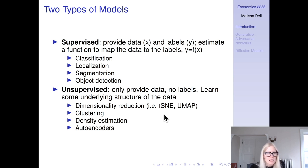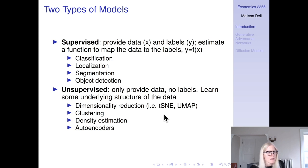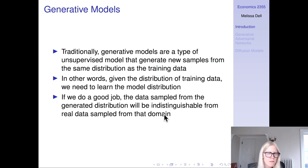On the other hand, we've also seen unsupervised methods in the course where we only provide data and there are no labels and no ground truth. Rather, what we're trying to do is learn some underlying structure that's present in the data. We've seen dimensionality reduction, clustering, density estimation, and autoencoders. Traditionally, generative image models were a type of unsupervised model that generate new samples from the same distribution as the training data.